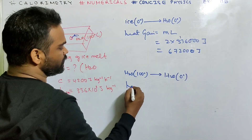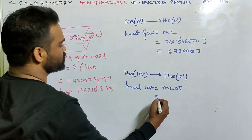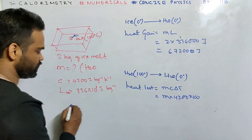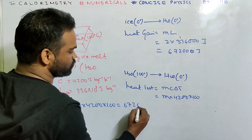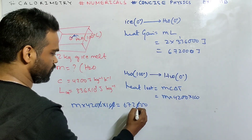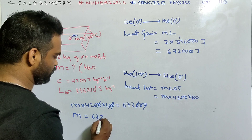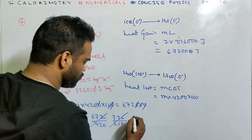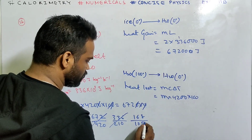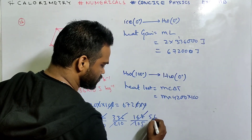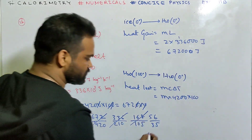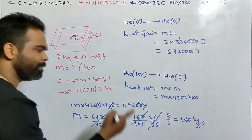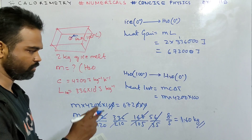In case of water, heat is lost. It loses heat via MC ΔT: M is unknown, C is 4200, and change in temperature is 100 (from 100°C to 0°C). Heat lost = M × 4200 × 100. Setting heat lost equal to heat gained: M × 420,000 = 672,000, so M = 672 / 420 = 1.60 kg.